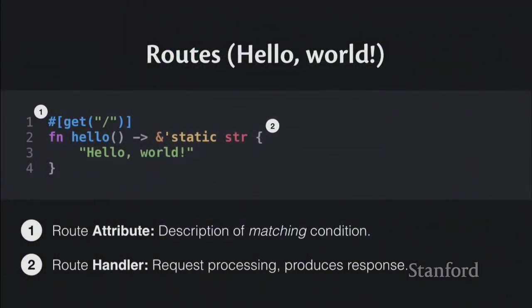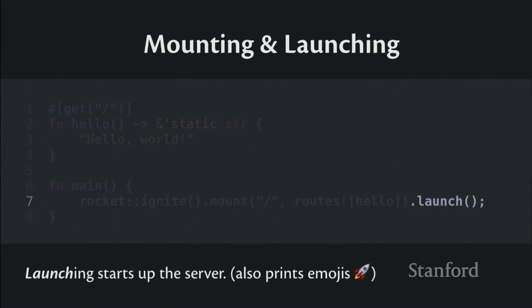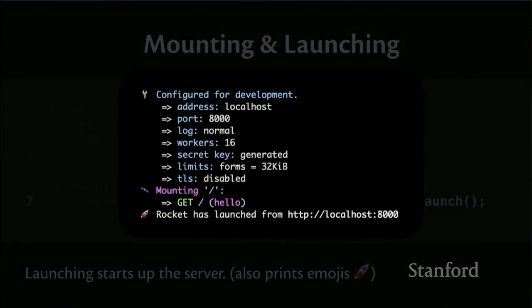To get this to compile and run, you need to tell Rocket about the route by mounting it and passing in the route name (in this case, 'hello'), then call 'launch' to start the application. The sequence is: 'ignite' to turn on Rocket, 'mount' to put handlers on Rocket, and 'launch' to actually launch Rocket. Calling 'launch' starts the server — Rocket has its own server — and prints some configuration info and emojis. If it finds any configuration issues it'll immediately abort; otherwise it starts and you can visit localhost:8000 to see your hello world.